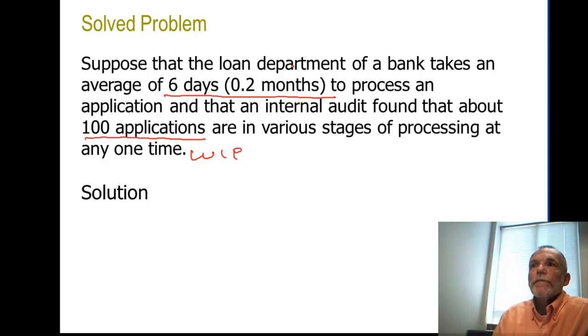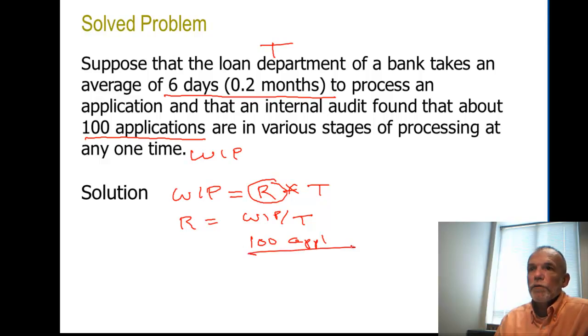And we're solving for the rate at which loans are processed. So remember work in process is rate times time. Solving for rate, we just say rate equals work in process divided by time. Our work in process is 100 applications, our time is 6 days or 2 tenths of a month, so let's say 0.2 months. Okay, so then that would give us a number of 500.